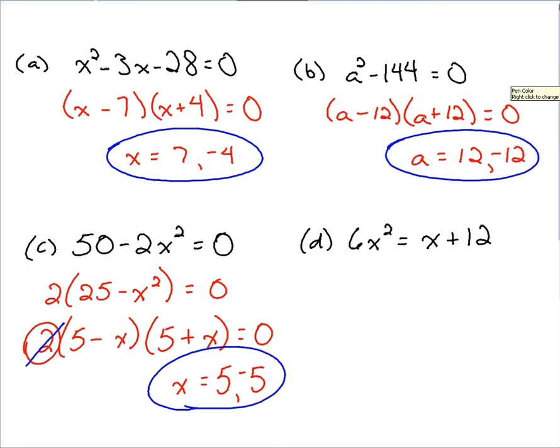Alright, so we've seen how to do this on the three previous ones. Any ideas on what we should do here on D? Should I subtract some stuff? Like set this equal to zero first? Yeah. Alright, that's a good idea. It's always nicer when you're doing these problems, it's always nicer to have a lead coefficient that's positive. So let's bring everything over to the left side. Keep the 6x squared on the left side, subtract the x over, subtract the 12 over. Now everything equals zero.